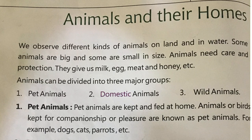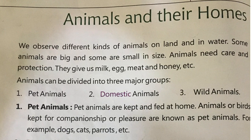Chapter 15: Animals and Their Homes. We observe different kinds of animals on land and in water. Some animals are big and some are small in size. Animals need care and protection. They give us milk, egg, meat and honey etc. Animals can be divided into 3 major groups: 1. Pet Animals, 2. Domestic Animals, 3. Wild Animals.